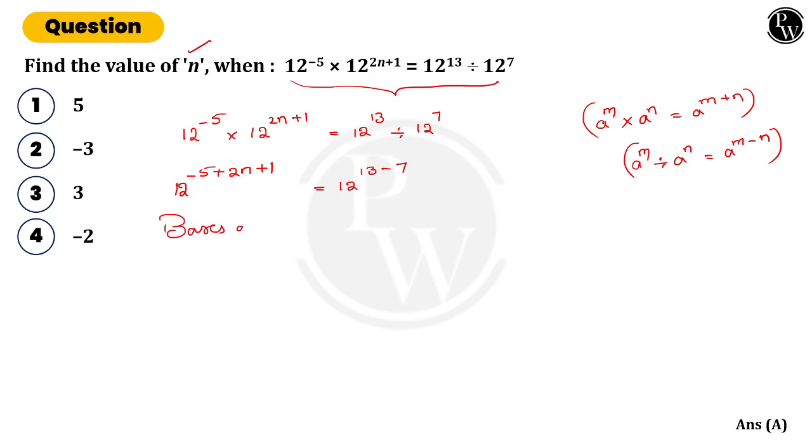Now see, bases are equal, then powers must be equal. So we need to equate like this. Minus 5 plus 2n plus 1 is equal to 13 minus 7.